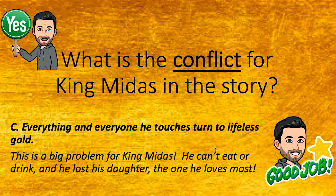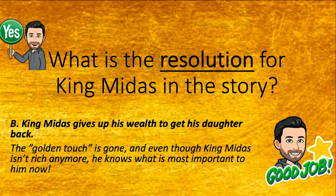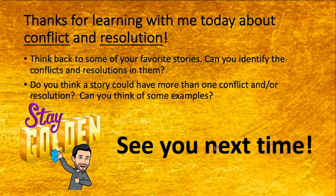What is the resolution for King Midas in the story? A: Penelope loves the golden eggs. B: King Midas gives up his wealth to get his daughter back. C: King Midas is greedy and he always wants more. What was the resolution? Yes — B: King Midas gives up his wealth to get his daughter back. That's how things get solved. The golden touch is gone, and even though King Midas isn't rich anymore, he knows what is most important to him now. Good job. Thanks for learning with me today about conflict and resolution. Think back to some of your favorite stories — can you identify the conflicts and resolutions in them? Do you think a story could have more than one conflict and resolution? Stay golden and see you next time.